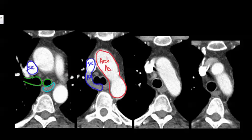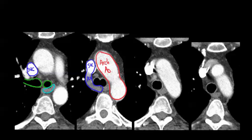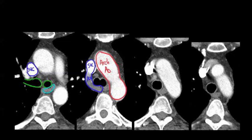These little nodes right here are going to be 4R, because they're on the right side. Here's another 4R lymph node, and another little 4R lymph node here. The 4R lymph nodes go all the way down below the esophagus. This is a little bit higher cut than this one — so this is the lowest cut, this is higher, and this is the highest.